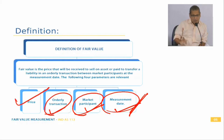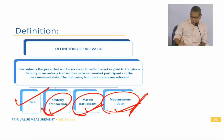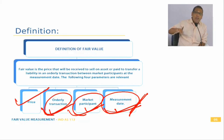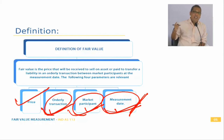When you talk about an asset, it's the price that we will get from the buyer if the transaction is orderly, between two market participants, and measured on the measurement date. If you talk about a liability, it is the price that we pay when we transfer a liability.